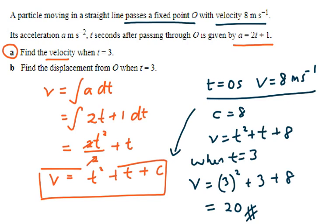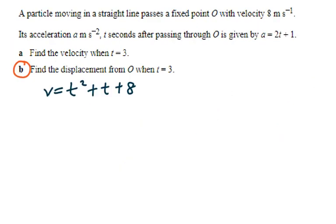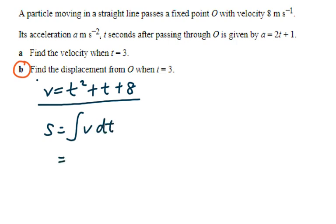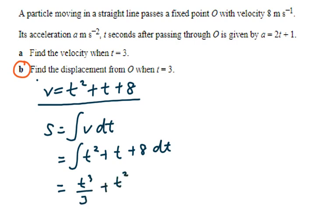Now let's move on to Part B. For Part B, you are required to find the displacement from O when t is equal to 3. From the previous part, we have velocity equal to t squared plus t plus 8. To get the displacement equation, integrate the velocity with respect to time. Hence, we integrate t squared plus t plus 8 with respect to t, giving us t cubed over 3 plus t squared over 2 plus 8t plus c.